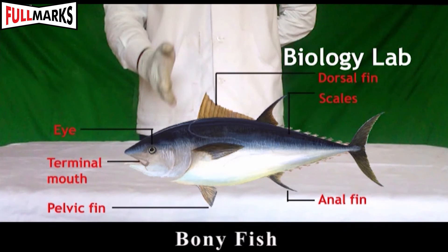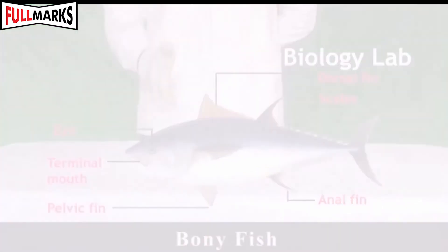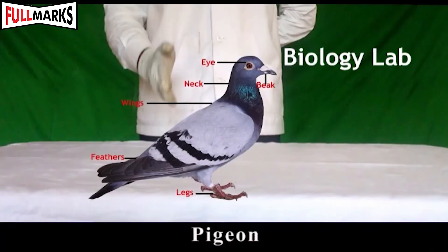Adaptive features of bony fish: the body is streamlined which helps in swimming; body is covered with scales to protect against water; gills are covered by an operculum for respiration.